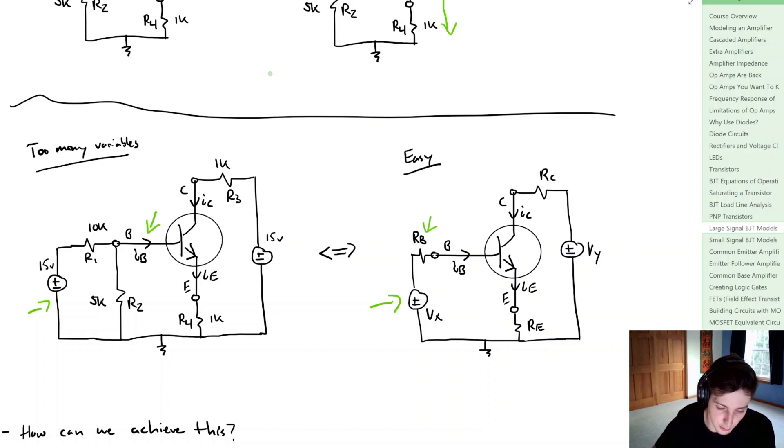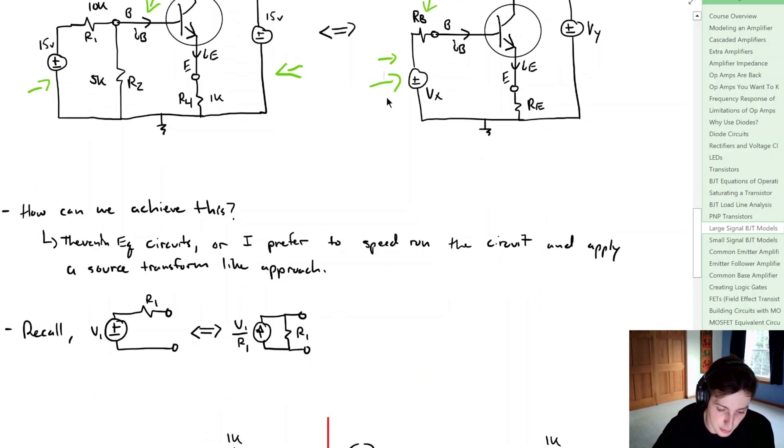How can we transform to have this circuit turn into this circuit? Well, let's recall a previous course where we looked at Thevenin equivalent circuits, or I prefer to actually speed around the circuit and apply a pseudo source transform-like approach.